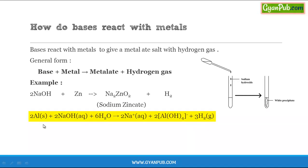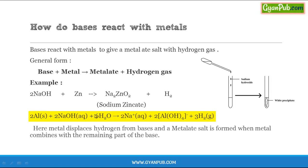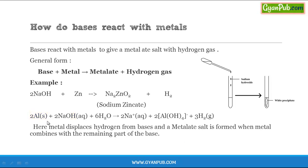Another example for the reaction between a base and a metal: aluminum when treated with sodium hydroxide in the presence of water gives sodium aluminate, and evolution of hydrogen gas also takes place. Here, the metal displaces hydrogen from the base and a metalate salt is formed when the metal combines with the remaining part of the base.